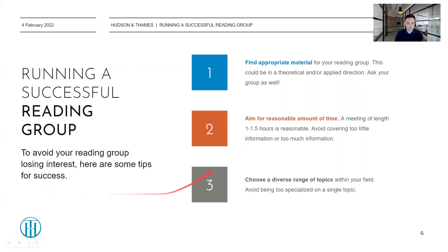A reasonable amount of time is about one to one and a half hours. If you do something too short, it could be too difficult to cover many interesting topics, especially if the topics are very complicated. But having it too long could lead to people being bored or end up leaving the group because it just consumes too much of their time. Avoid also covering too little or too much information within a session — it should be a reasonable amount that people can digest, think about, and ask questions if they need to.